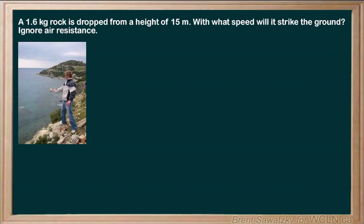In this question we have a rock being dropped from the edge of a cliff, or at least from a height, and we're interested in what the speed is when it's just about to strike the ground. Just before it hits the ground is where it's still a projectile — once it hits the ground it becomes less predictable, depending on whether it bounces or embeds itself.